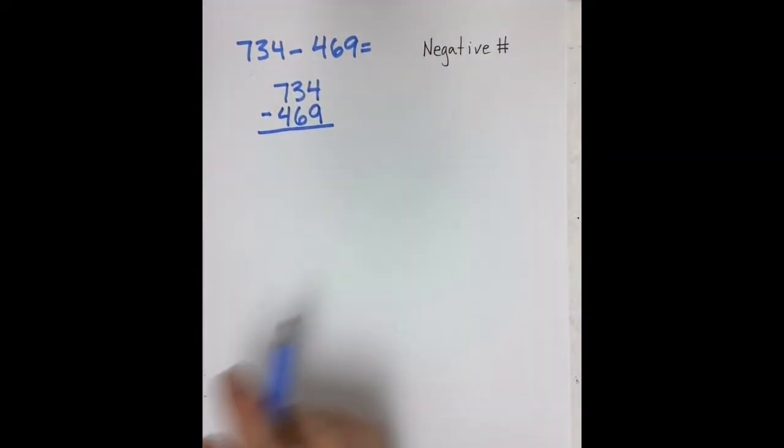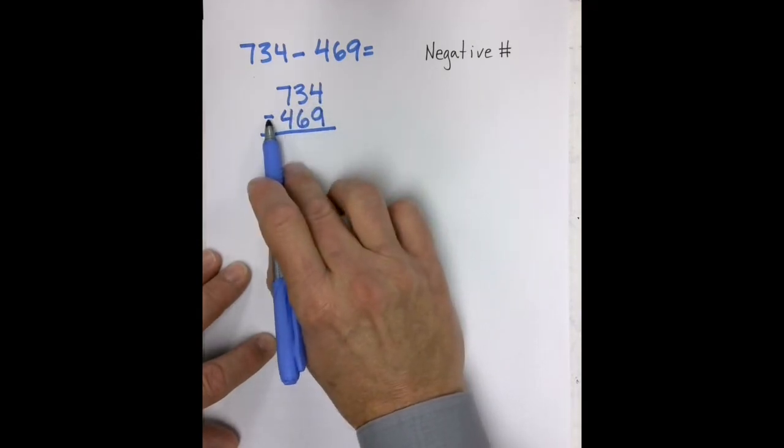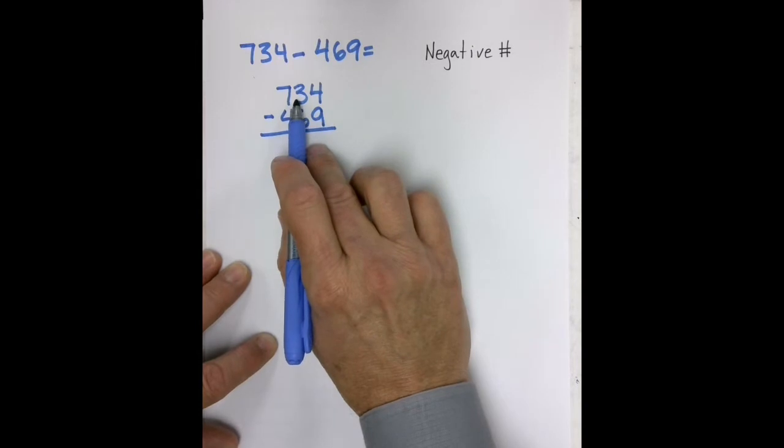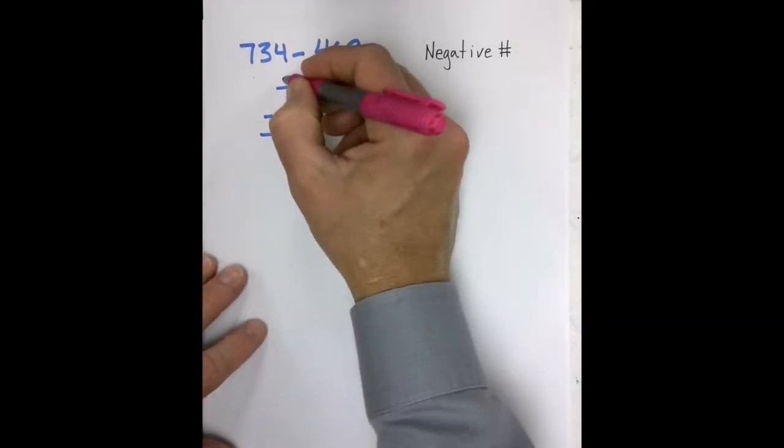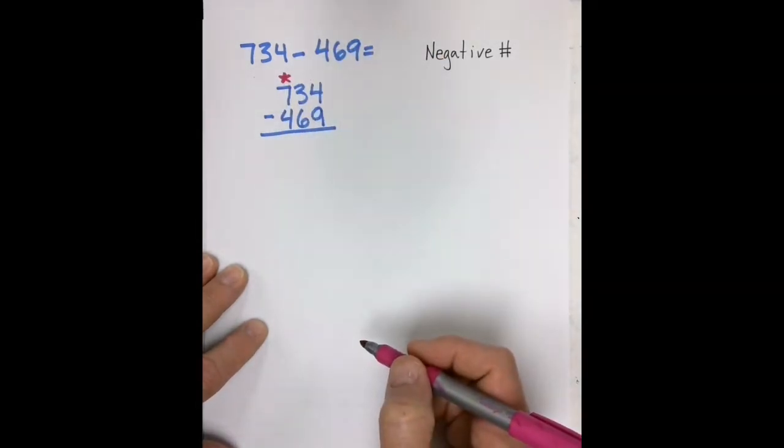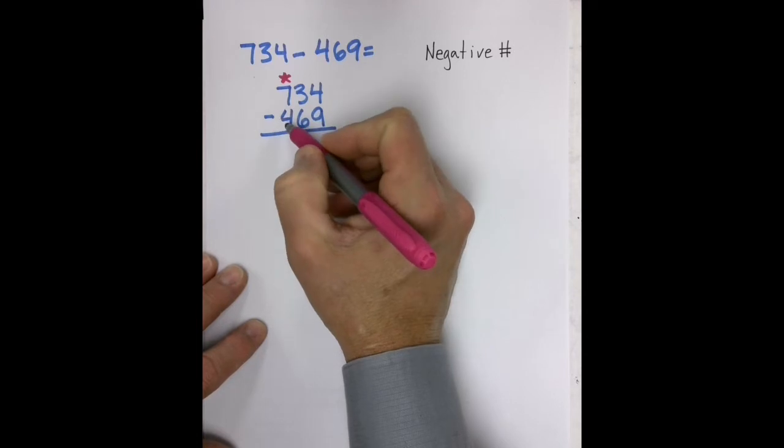Now in the standard algorithm, we would start right here at the ones. We can't, if we have four, we can't remove nine, so we would regroup. In the negative number strategy, we actually start right here. And we start with the hundreds, because I can do, if I have seven, I can subtract 400.